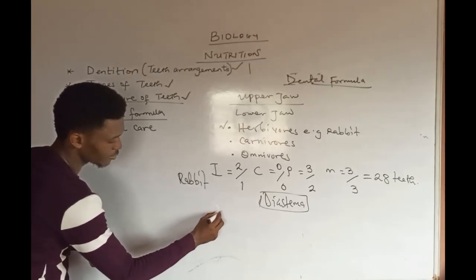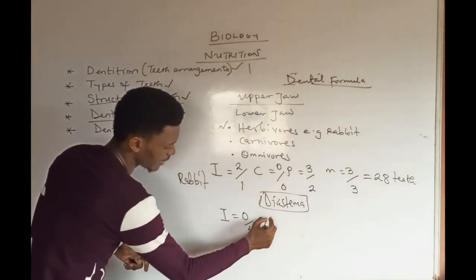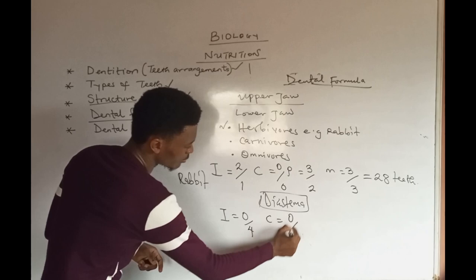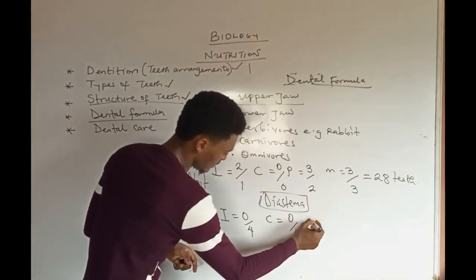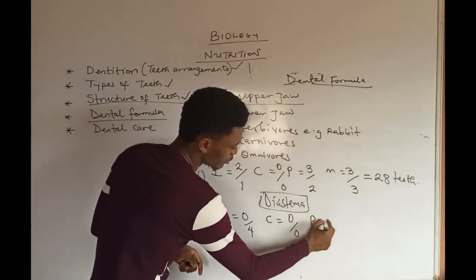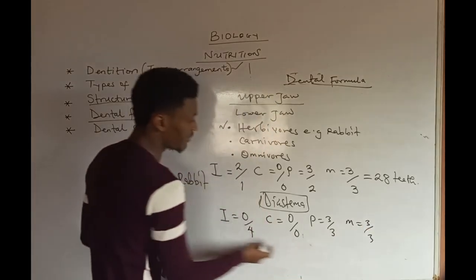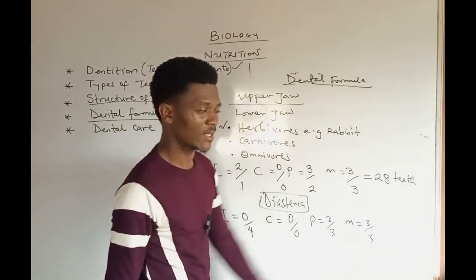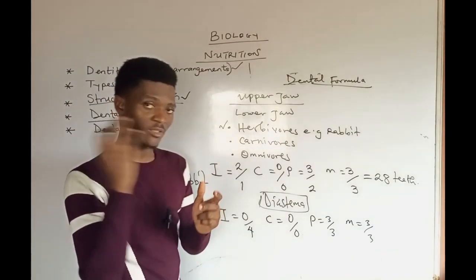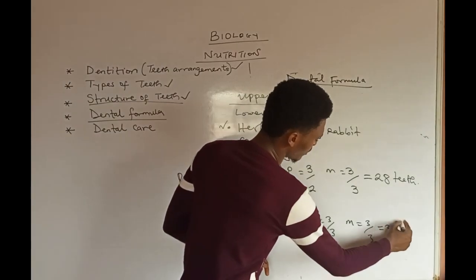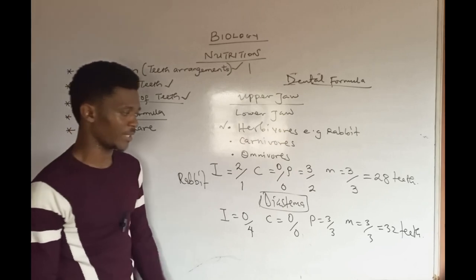For cattle, sheep, and goat: incisors are 0 over 4, canines are 0 over 0, premolars are 3 over 3, and molars are 3 over 3. When you sum up everything — 4+2=6, plus 4 gives 16 — then 16 times 2 gives a total of 32 teeth.